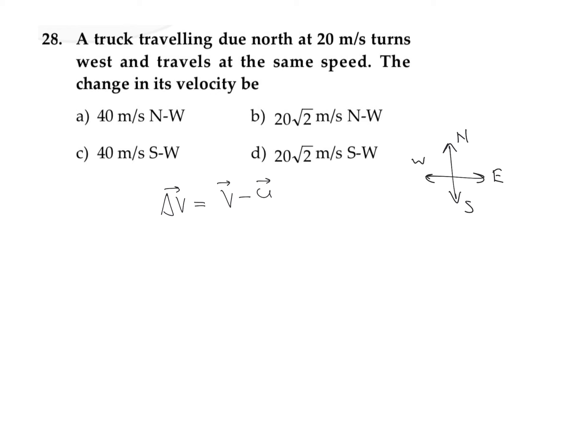The truck is traveling north at 20 meters per second. This is its initial velocity vector, which we can call u vector—20 meters per second towards north.